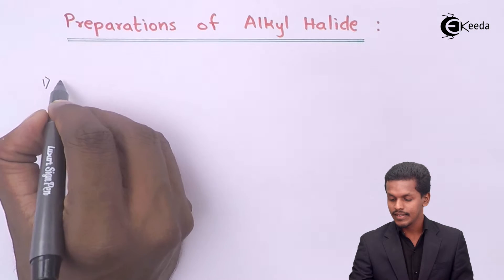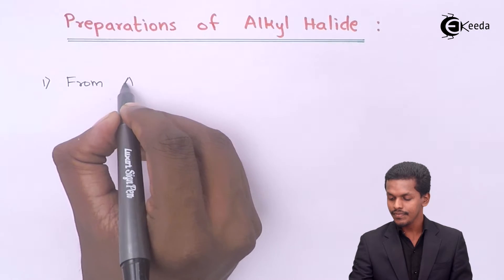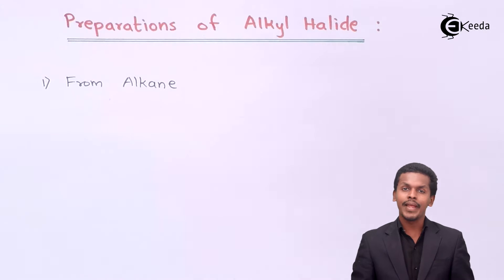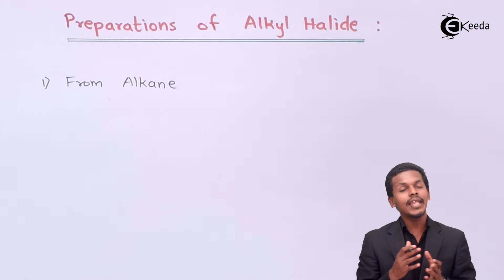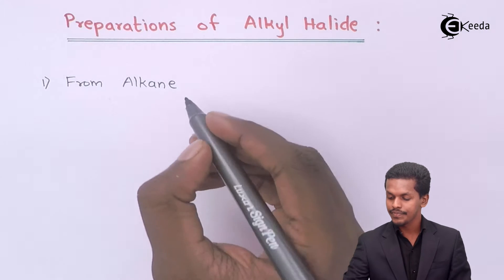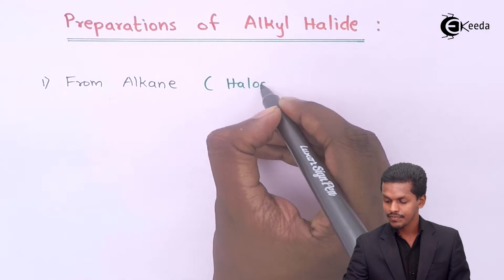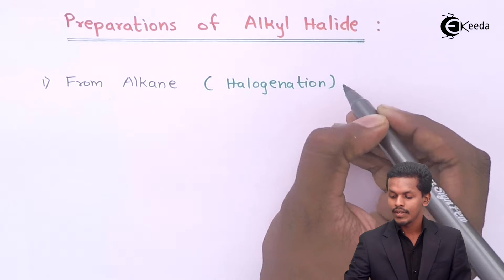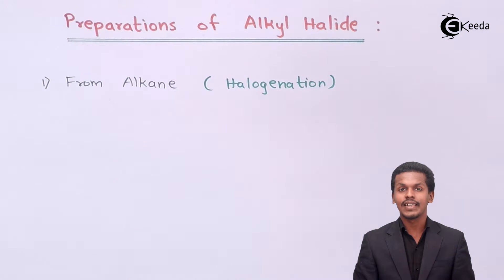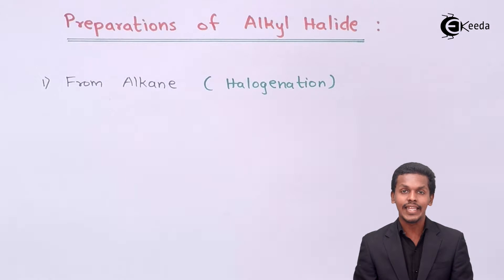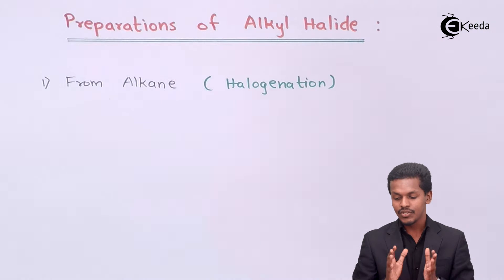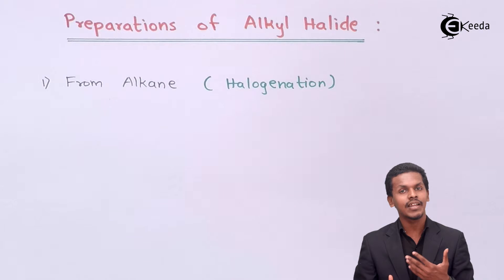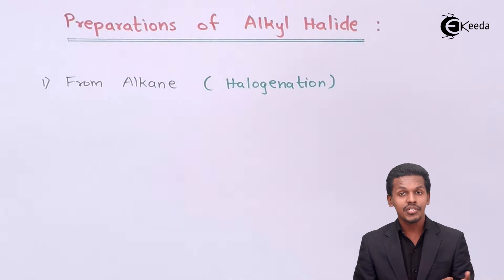Alkyl halides can be prepared from alkanes — this is what we discussed in our previous lecture during 11th standard as well. We can prepare a particular alkyl halide by halogenation. Halogenation is the process in which one or more hydrogen atoms of an alkane are replaced by a corresponding number of halogen atoms. This can be done by chlorination, bromination, and iodination.